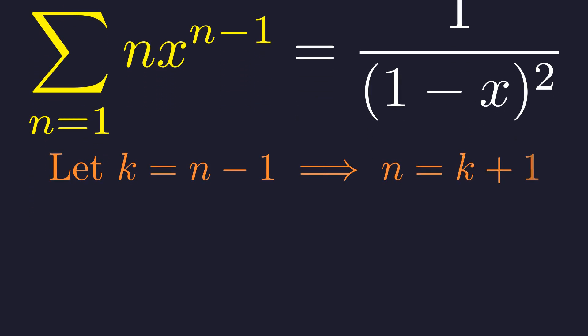Let's perform a substitution. We'll define a new index, k, as n minus 1. This means that n is equal to k plus 1. We also need to change the starting index. When n is 1, k is 0.